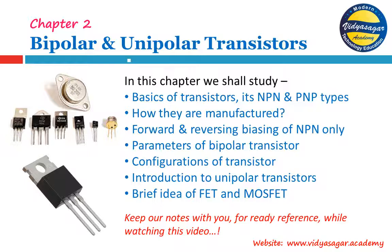Then we shall see the manufacturing of these transistors, their forward and reverse biasing, the relevant parameters associated with the transistor. Briefly, we shall see the configurations of transistors — the common emitter, common base, and common collector configuration. And we shall see just a brief introduction to unipolar transistors: FET, that is field effect transistor, and MOSFET, metal oxide semiconductor field effect transistor.